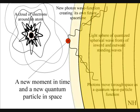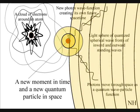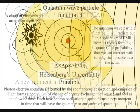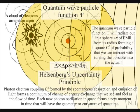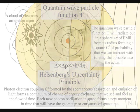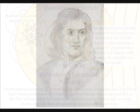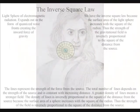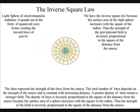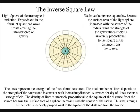We have one universal process that begins with the quantum wave particle function or probability function of quantum mechanics expanding out as an inverse sphere, and ends with the inverse square law of gravity and Newton's third law of motion: to every action there is an equal and opposite reaction.